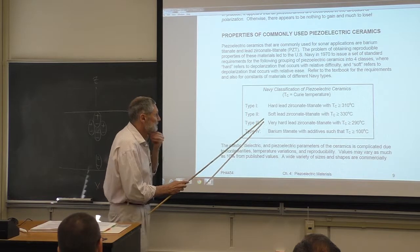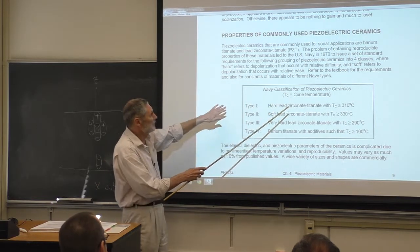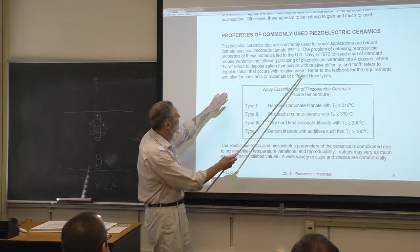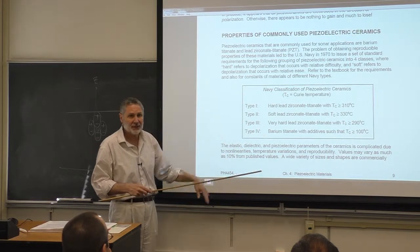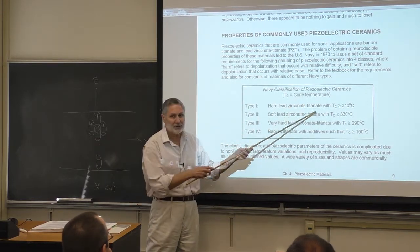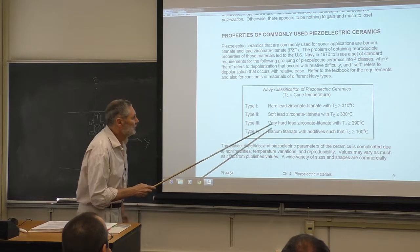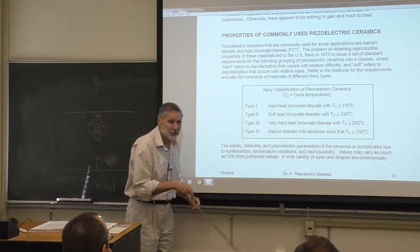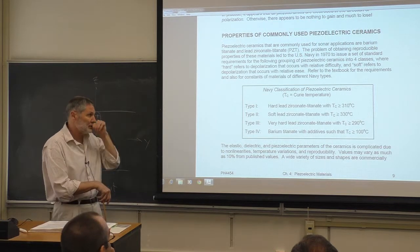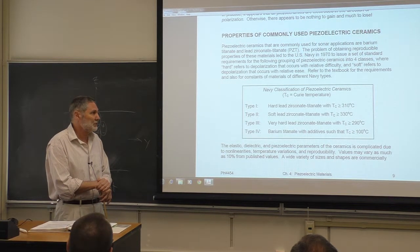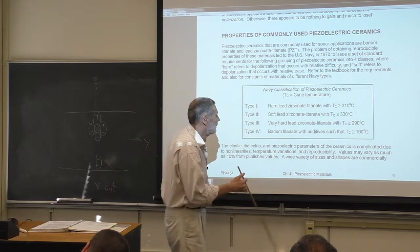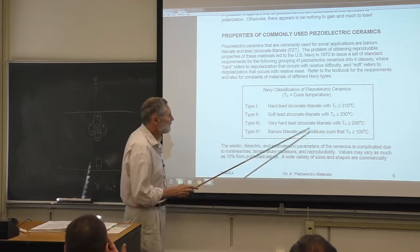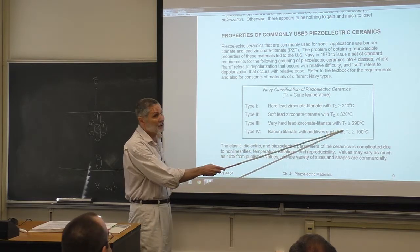The properties and standards for these types are listed in the textbook. There are two hard types and the Curie temperature is important — if you get near the Curie temperature you're going to start to lose your polarization and have bad effects, possibly nonlinear behavior. These Curie temperatures are all pretty high in Celsius.